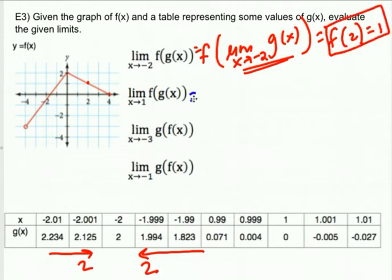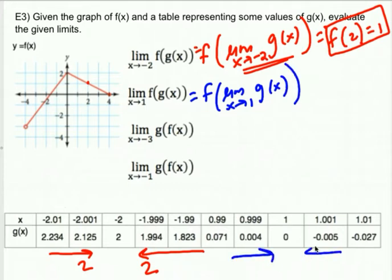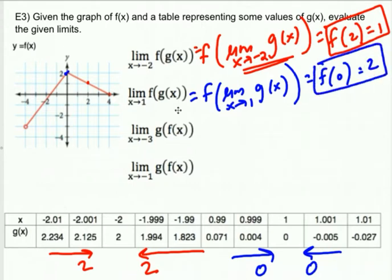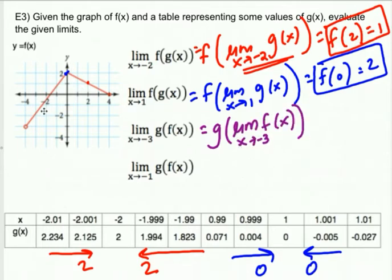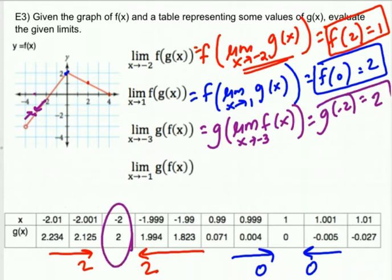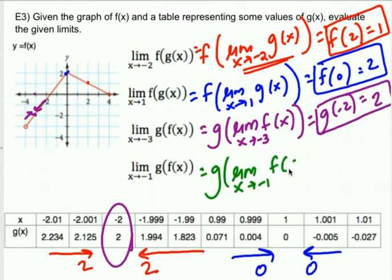Next, this is F of the limit as X approaches one of G of X. When I approach from both sides on the table, I'm approaching a zero, so that's F of 0. F of 0 on the graph seems to be a Y value of 2. Now in the reverse direction — G of F — this is G of the limit as X approaches negative three of F of X. At negative three on the graph, both sides approach a Y value of negative two, so that's G of negative two, which is 2. For the last one, G of the limit as X approaches negative one of F of X: at negative one the graph approaches a Y value of 1, so that's G of 1, which is 0.